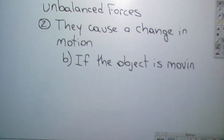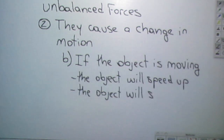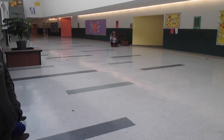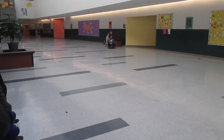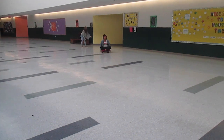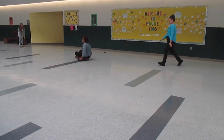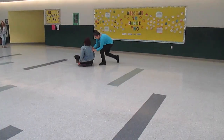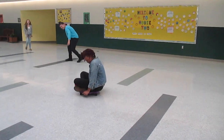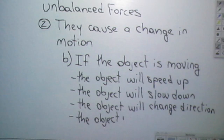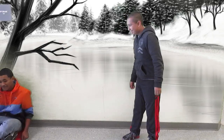For objects that are moving, unbalanced forces will cause the object to speed up, slow down, or change direction. In this example you can see a student sliding across the floor and being affected by another force and changing their direction. An unbalanced force can also cause an object to stop. In this example you see the moving object being stopped by another student.